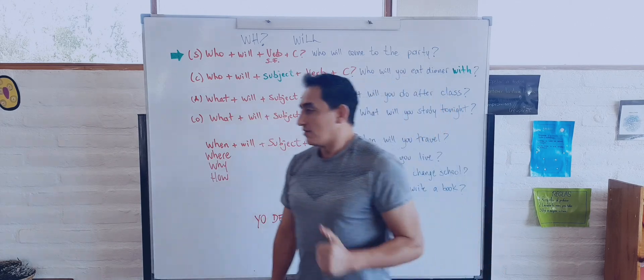And then, the other questions have different structures. Like the WHO COMPLEMENT. You are going to use the SUBJECT. WHO plus WILL plus the SUBJECT. The verb in simple form and the complement. Let's check. WHO WILL YOU EAT DINNER WITH. And that is important. That preposition that you use with the verbs, you need to use it.